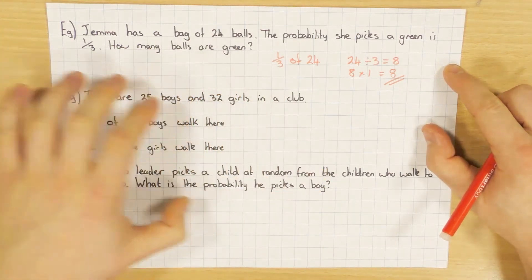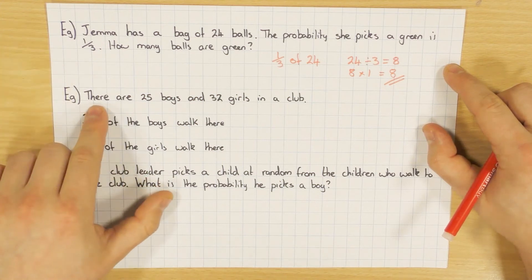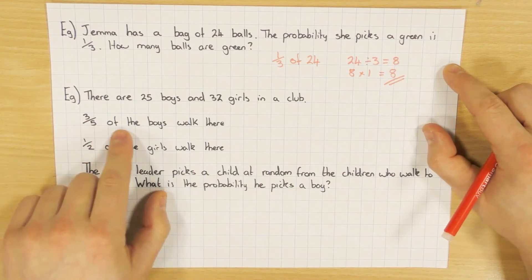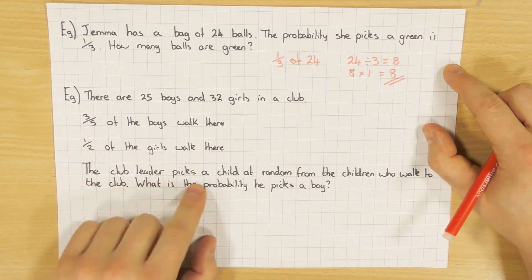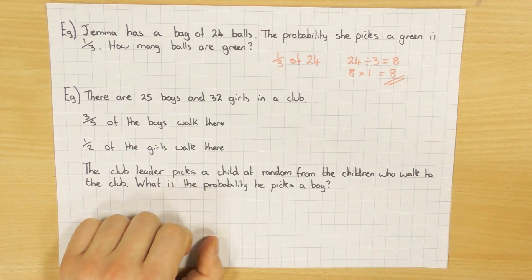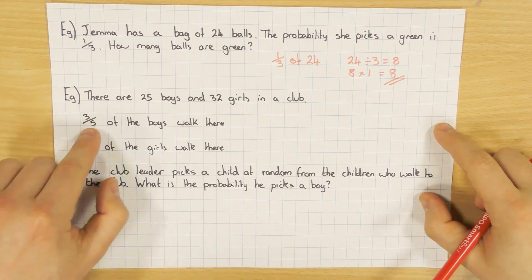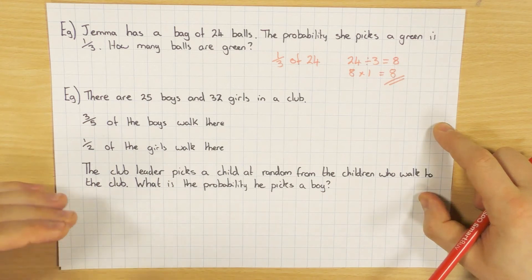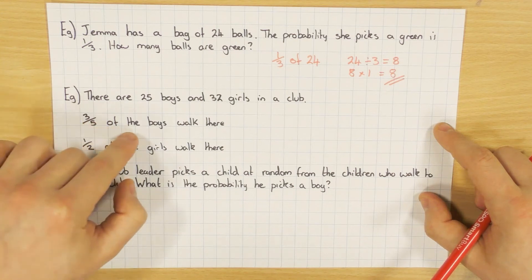Building on from that, you could get a juicier question like this one here. We're told there are 25 boys and 32 girls in a club. Three fifths of the boys walk there, a half of the girls walk there. The club leader picks a child at random from the children who walk to the club. What's the probability he picks a boy? Now, with a question like this, they don't tell you this sort of information for nothing. And there's usually marks awarded for doing each line as it comes. So that's what we're going to do.